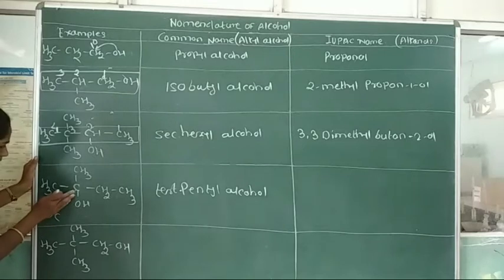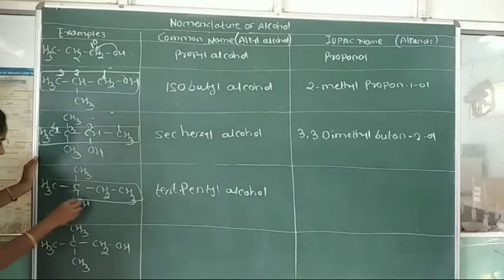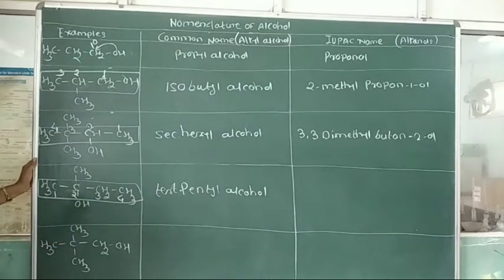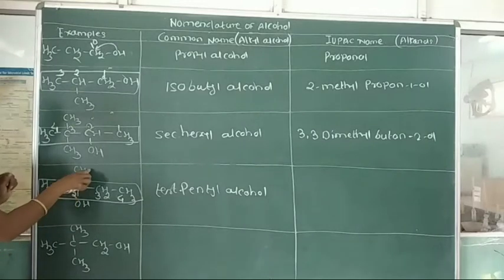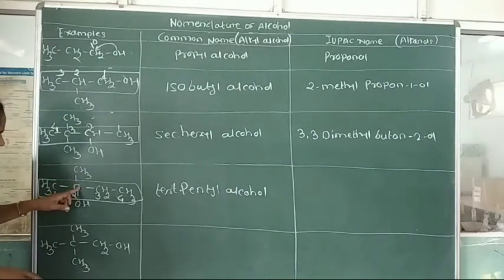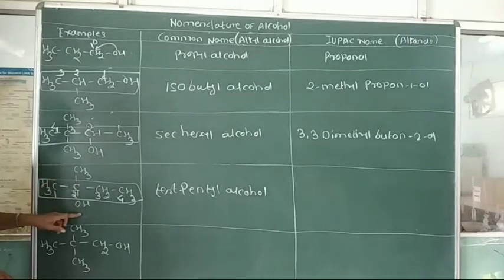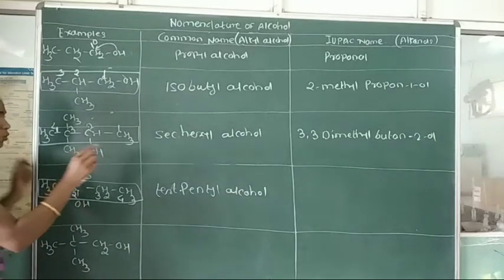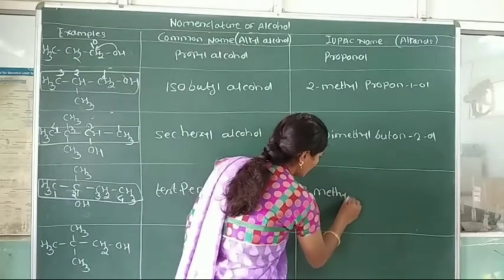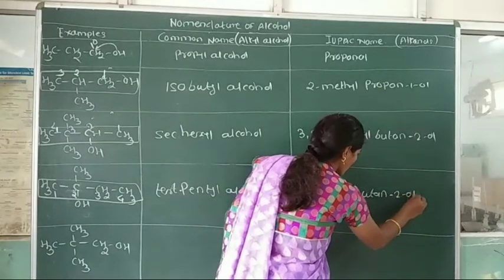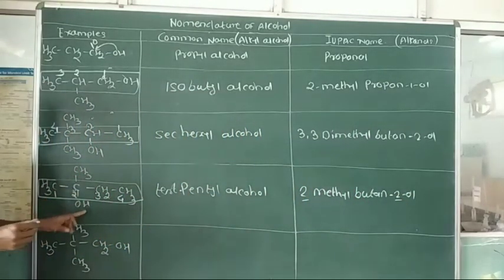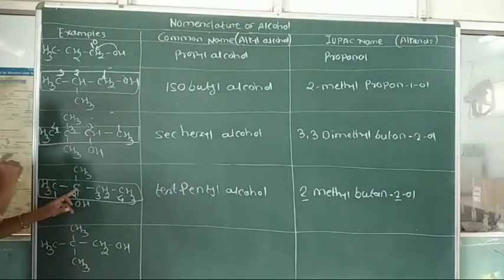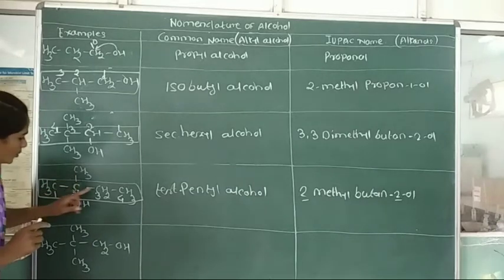In the IUPAC system, select the longest continuous chain and number it 1, 2, 3, 4. Carbon number 2 has both a methyl group and a hydroxy group attached. With 4 carbon atoms in the selected chain, the IUPAC name is 2-methylbutan-2-ol.